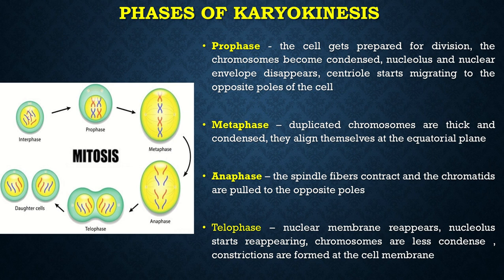Metaphase is followed by anaphase, where the duplicated chromosomes now move towards the opposite poles. The spindle fibers contract and the chromatids are pulled apart — that means they are pulled towards the opposite poles.